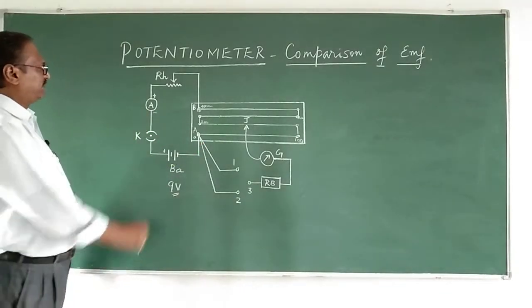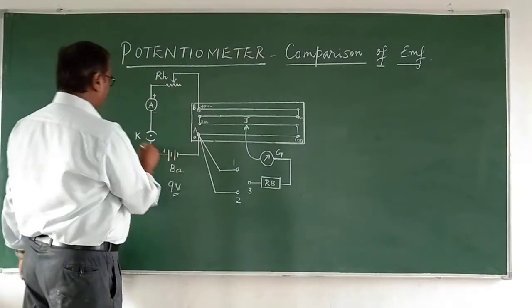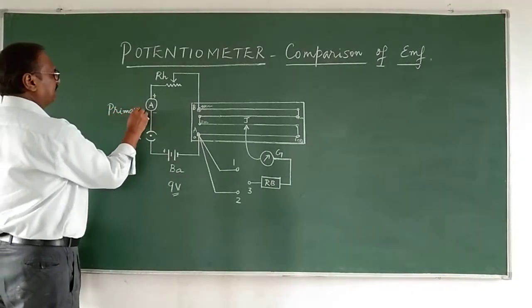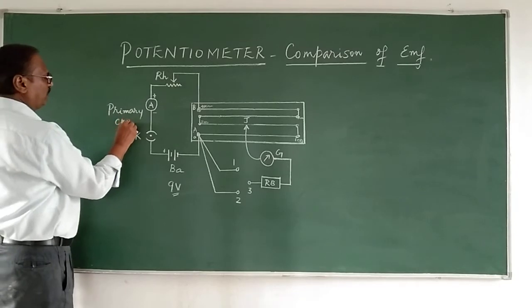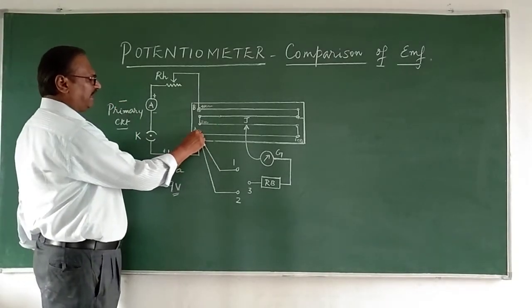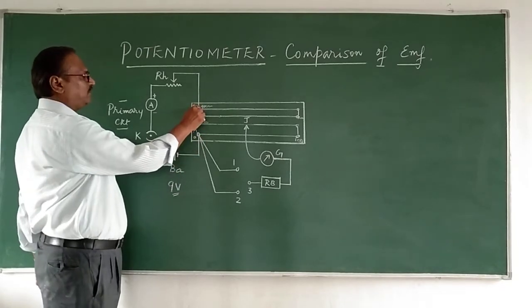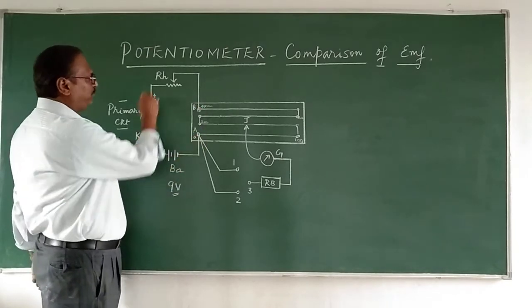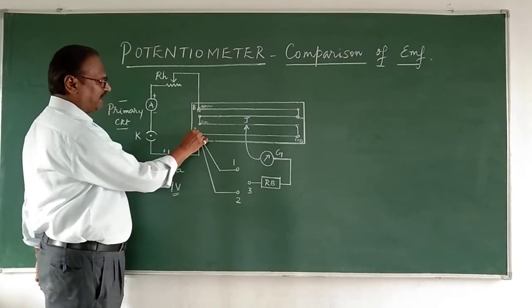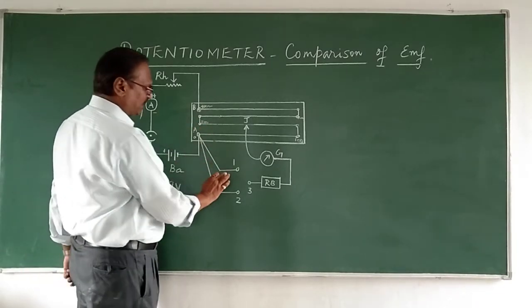I can fix a particular amount for the particular set of values which I am going to take, the current value. This completes the primary circuit for the thing to function. Now you come to the other part of it. The same point A and the endpoint is B, so A to B the circuit is complete.